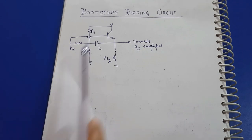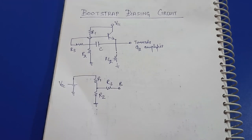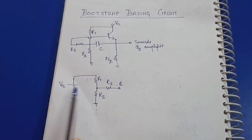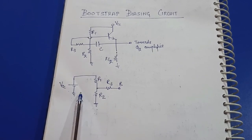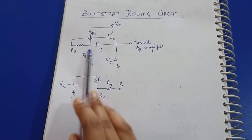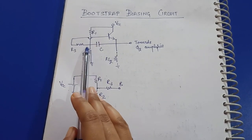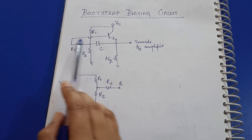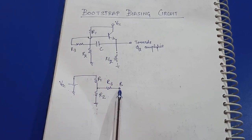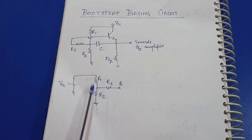In the DC analysis, the capacitor is replaced by an open circuit, and the R1, R2, R3 network is replaced by the Thevenin equivalent circuit. VCC is the DC battery and the capacitor becomes open circuit. From VCC we have R1, then R2 to ground, and R3 towards the base terminal — that's how the above circuit is redrawn.